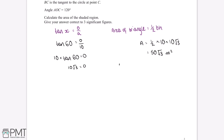We double our value for the area of the triangle, and putting this into our calculator gives us a value of 173.21 metres squared.